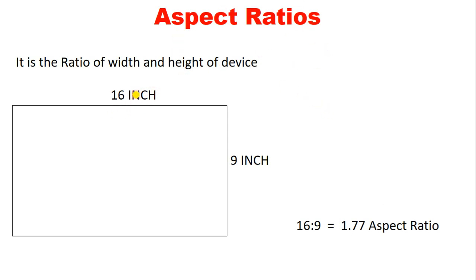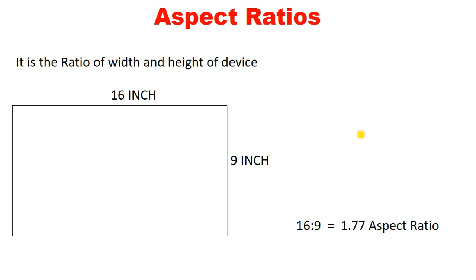So I hope you have understood what aspect ratio is — it is the ratio of the width and height of a device. When we divide the width by the height, we get the answer, and that answer is the aspect ratio. For example, if your device is 16 inches wide and 9 inches tall, 16 divided by 9 gives you the aspect ratio.